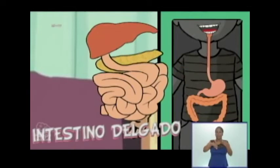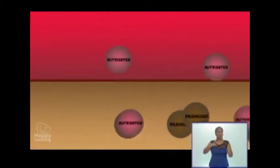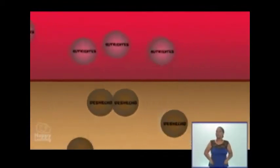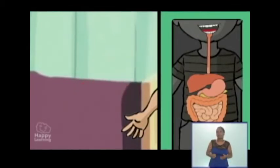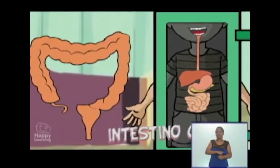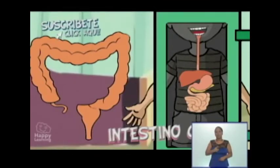En el intestino delgado, unos jugos producidos por dos glándulas, el hígado y el páncreas, finalizan los procesos para transformar los alimentos en nutrientes. Una vez convertidos en nutrientes, estos atraviesan las paredes del intestino delgado y pasan a la sangre para ser aprovechados por todas las células de nuestro cuerpo. La parte de los alimentos que el cuerpo no puede aprovechar pasa al intestino grueso, donde se acumulan las sustancias que el organismo no puede digerir y se absorbe el agua que estas sustancias contienen.